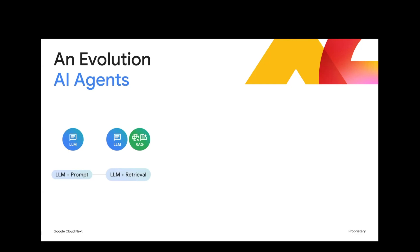With RAG, people said the model is able to do a lot more because it's not bounded by the knowledge embedded into the model - it can actually get real-world data. But quickly people realized that is not enough. We want the model to be able to observe and act upon user's requests. So that's where function calling came in, and what we call tools - we give the model a set of tools to act on behalf of the user.